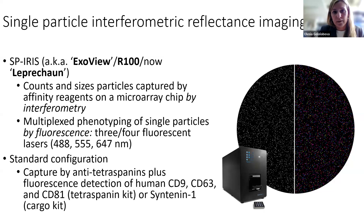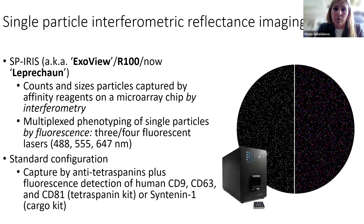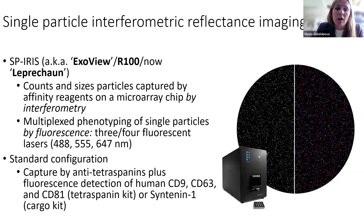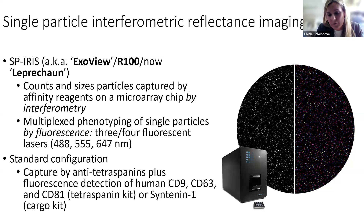Microarray chips are covered with some sort of antibodies. The standard configuration available for purchase is tetraspanins — for both human and mouse samples, including CD9, CD63, and CD81 kits. In addition to the antibodies of interest used to capture EVs, they also provide negative control spots, usually IgG spots from a different species. For human samples, there are mouse IgG spots, which will show you non-specific capture of your particles, contamination from different species, or if your antibody of interest can be captured by different antibodies. This is a very important spot on the chip.